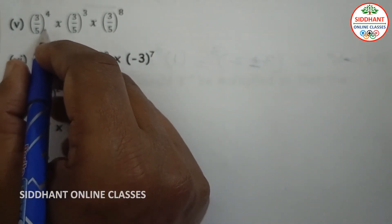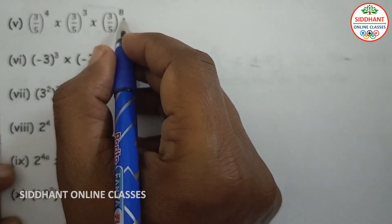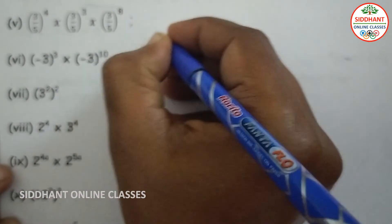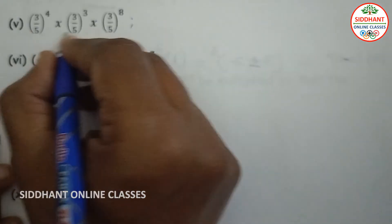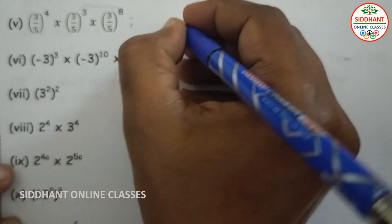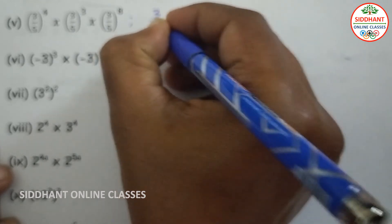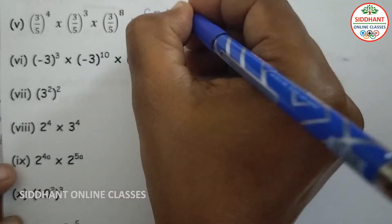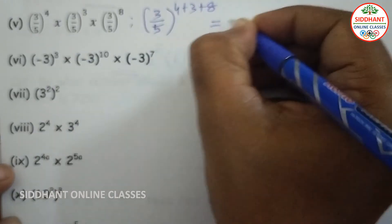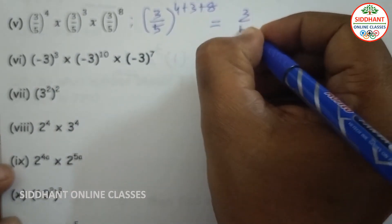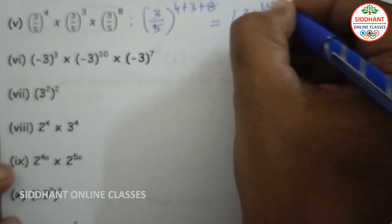Fifth one: (3/5) to the power of 4 into (3/5) to the power of 3 into (3/5) to the power of 8. Bases are same, so using a to the power of m into a to the power of n equals a to the power of m plus n, we add the powers: 4 plus 3 plus 8, giving (3/5) to the power of 15.